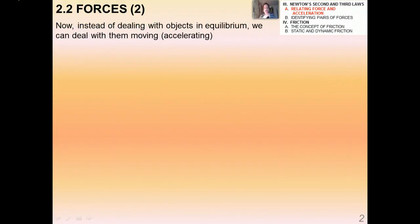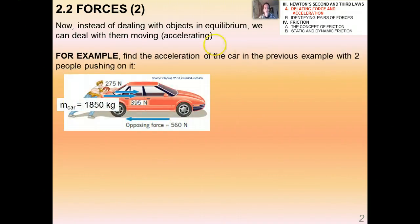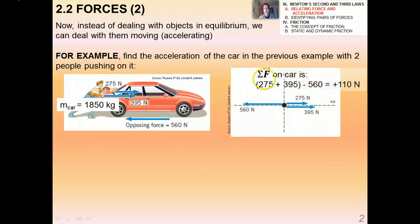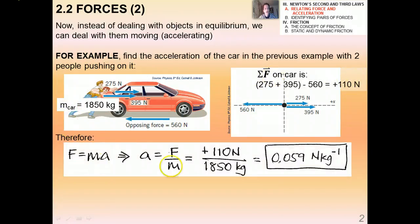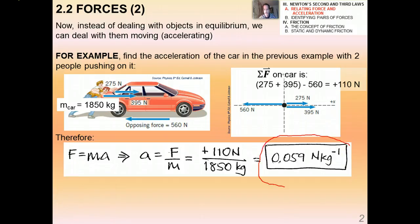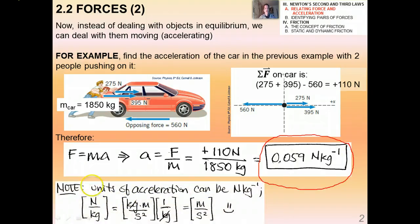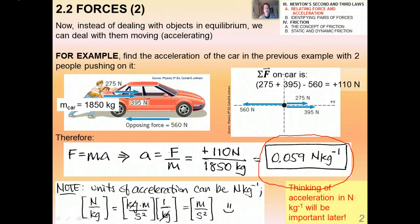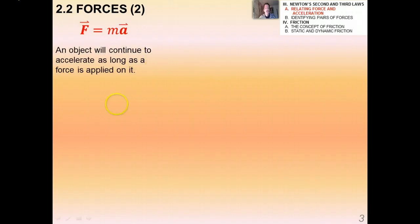Instead of dealing with objects in equilibrium, we can now deal with moving, accelerating objects — and it's not much more difficult. For example, revisiting the car with two people pushing on it: the net force is still 110 newtons. Since F = ma, solving for a gives F/m = 0.059 newtons per kilogram. A newton per kilogram works out to be the same as a meter per second squared. Thinking about acceleration in newtons per kilogram will be very important later in your physics studies.